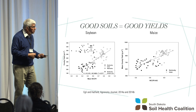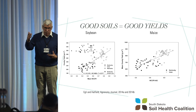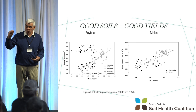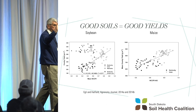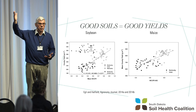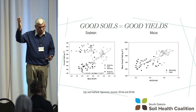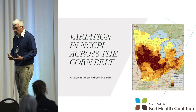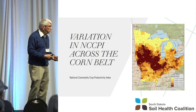We did an analysis looking at the relationship between the National Crop Commodity Productivity Index (NCCPI) and county-level yields across three states — Kentucky, Iowa, and Nebraska. The NCCPI goes from zero to one: the better the soils, the higher the average county yield. We saw that in corn, soybeans, and all these different crops. As we move from east to west in the Corn Belt, we see all these different changes.